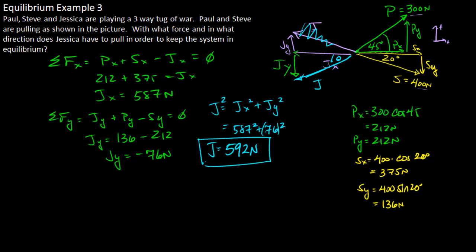And then we want to find the angle her force is at. In this case, you can actually use sine, cosine, or tangent since we know all three sides of the triangle. I'm going to use tangent. So I can say the tangent of the angle that Jessica's force is at is equal to her y-force divided by her x-force, her opposite over the adjacent. So this is going to be equal to 76 over 587.